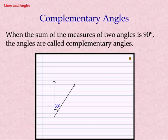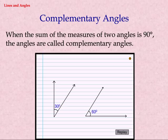Complementary Angles. When the sum of the measures of two angles is 90 degrees, the angles are called Complementary Angles.